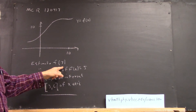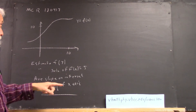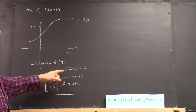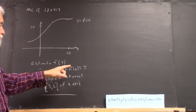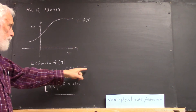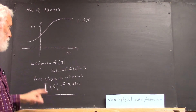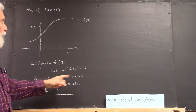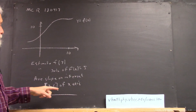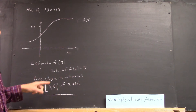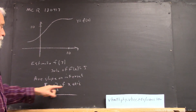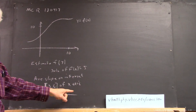And then estimate the value f of 7. Estimate the solution of the equation f of x equals 5. Find the average slope on the interval 3 to 6 of the x-axis.